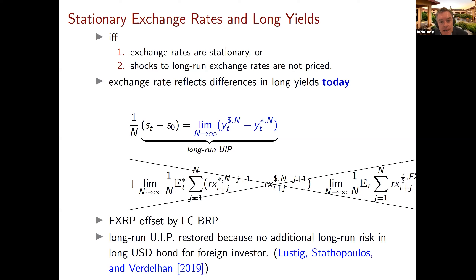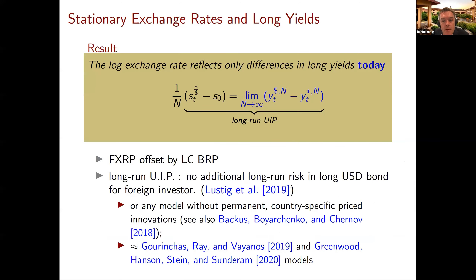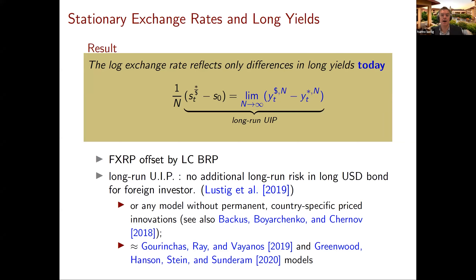There's recent work by Gourinchas, Reyvanios, and Greenwood, Hansen, Stein, and Sundaram that builds models implementing a version of long-run UIP. In the cross-section, it does seem that there's no currency carry trade to be earned at the long end of the yield curve. Going long in longer-maturity bonds of high interest rate countries like Australia and short in long-maturity bonds of low interest rate countries like Japan or Switzerland does not give you a large excess return. It's because the foreign currency risk premium — which is low or negative for the yen — is offset by a higher term premium or bond risk premium.